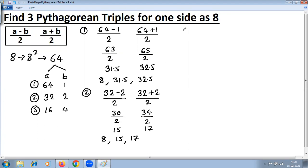Let's calculate third triple using third set of values, 16 and 4. a is 16, b is 4. 16 minus 4 upon 2, 16 plus 4 upon 2.